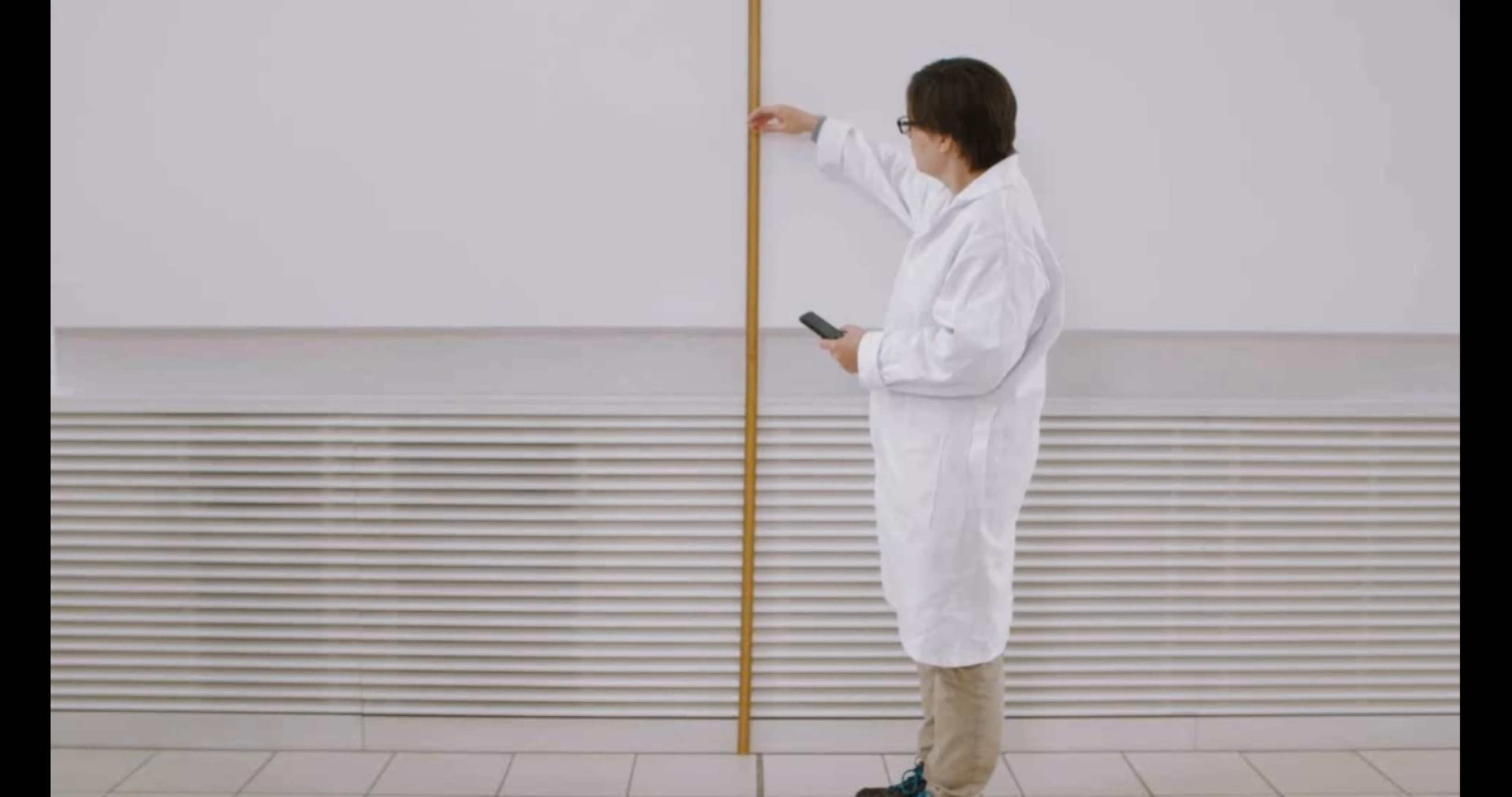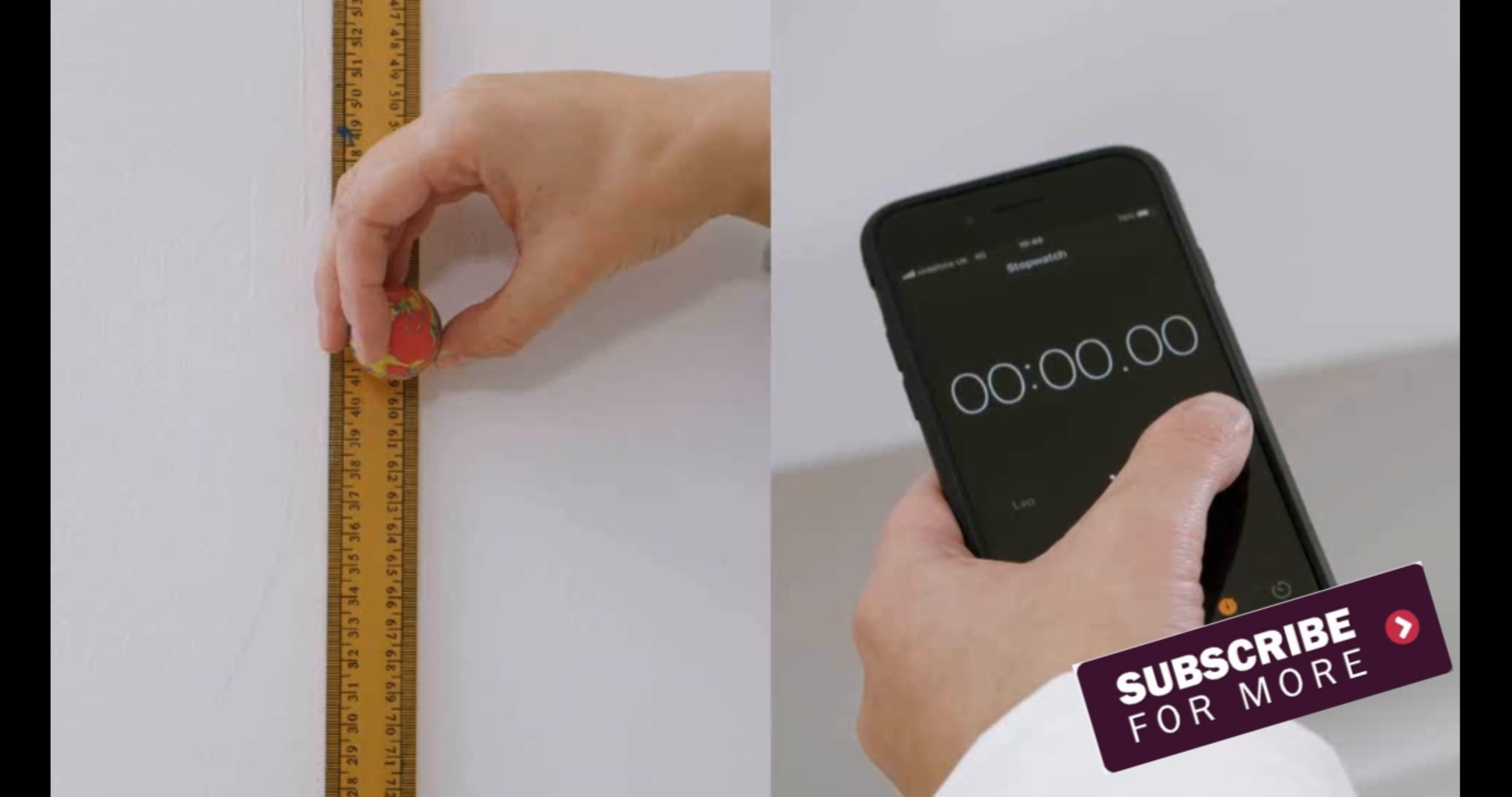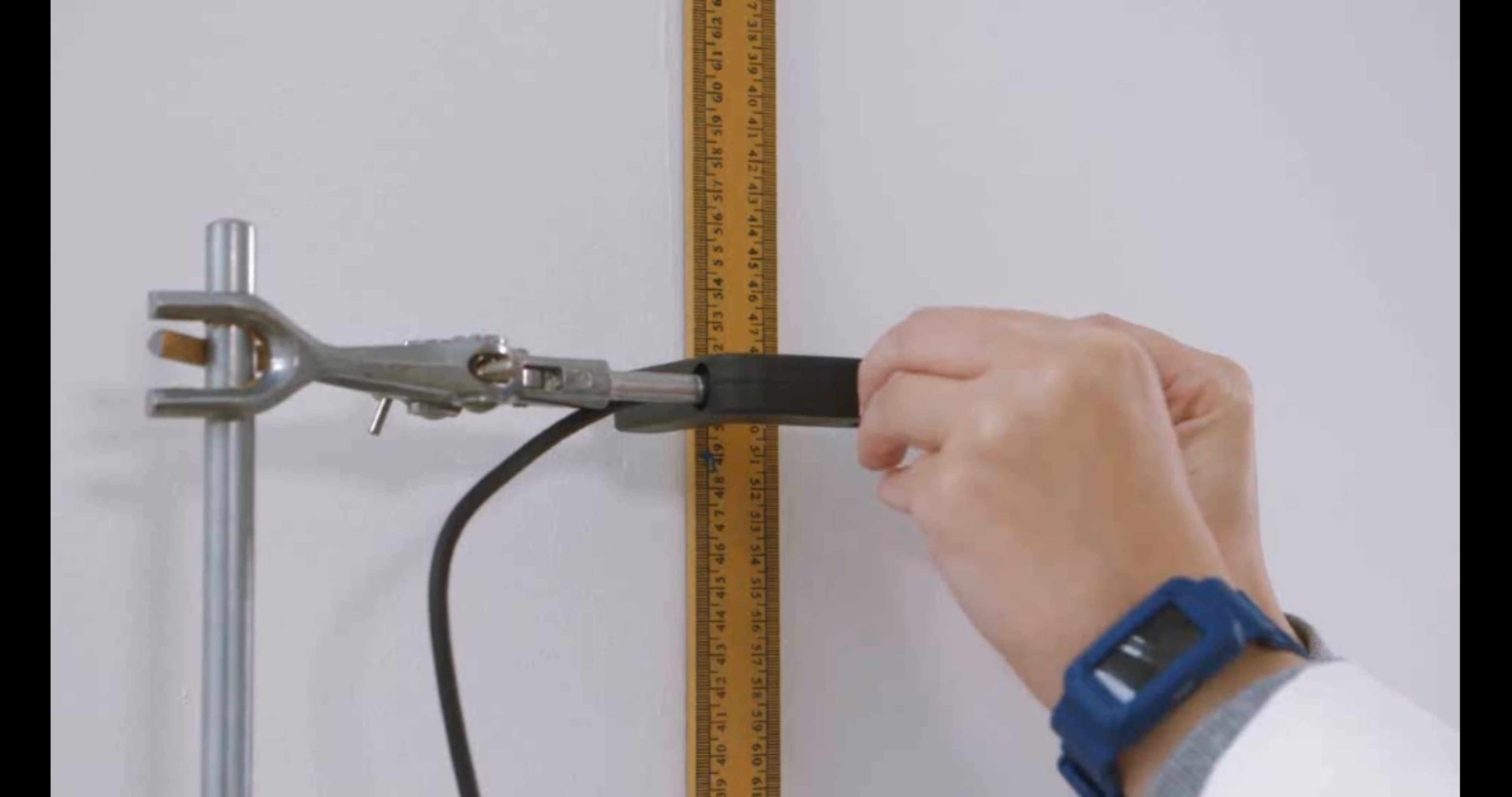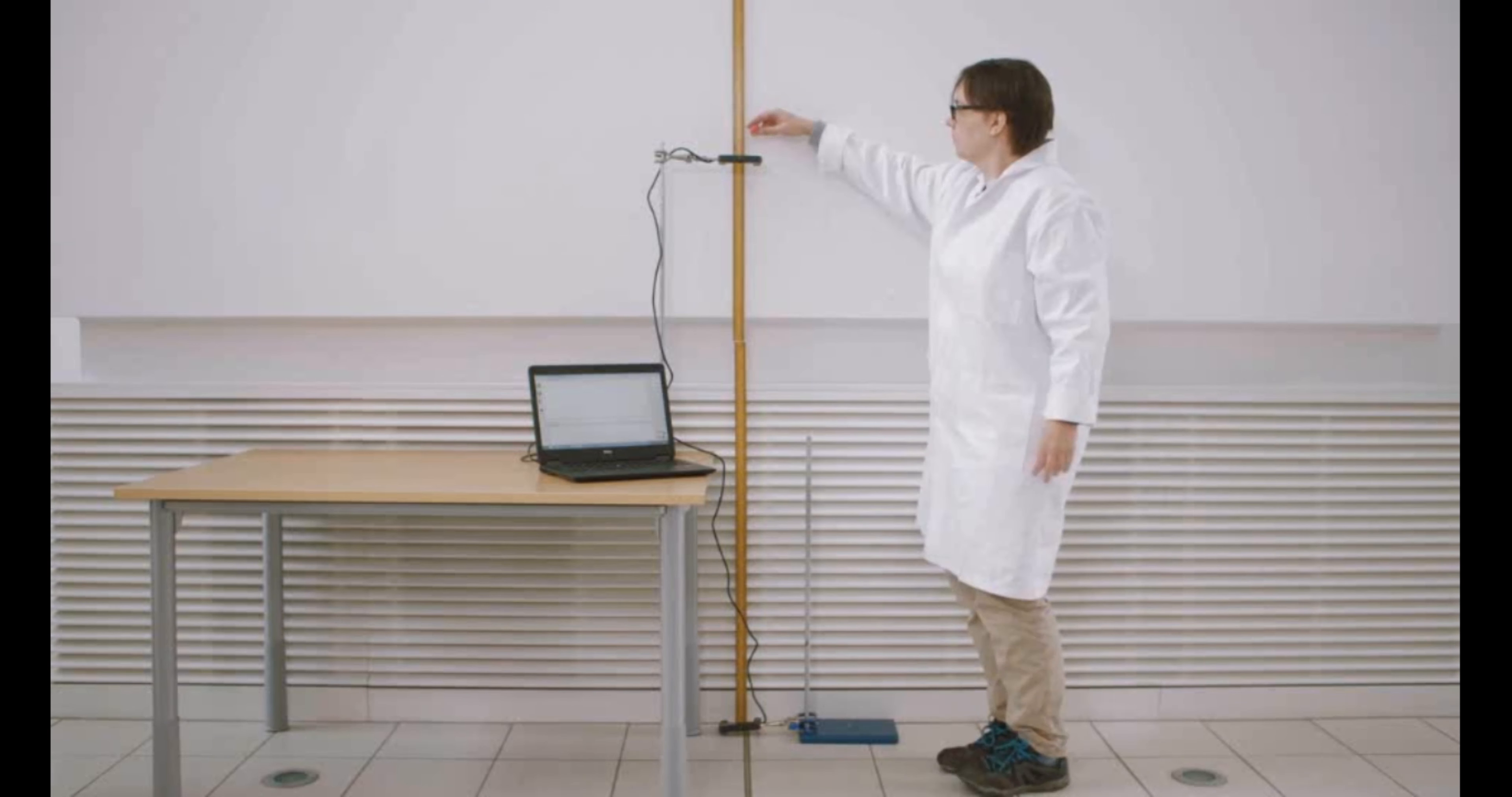Your measured value may be different to the expected value of 9.81 metres per second squared. Although the method shown can produce a reasonably accurate value for the acceleration of free fall, there are large measurement errors involved. Some of these can be minimised through the use of data logging equipment.